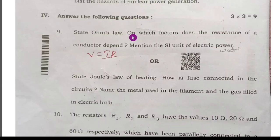Along with that, they asked one more question: what is the SI unit of electric power? The SI unit of electric power is Watt.